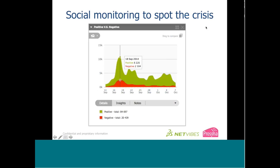Looking at the positive versus negative coverage about the NFL: this dashboard begins on September 13th, when the crisis was just beginning. What you'll notice is there's a huge spike on September 18th where not only the negative coverage went up a lot, but also the positive coverage — which is interesting. The conversation really spiked around that point.